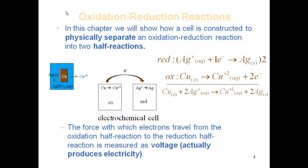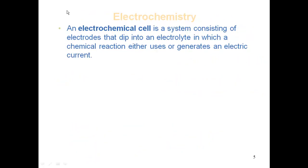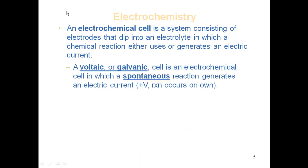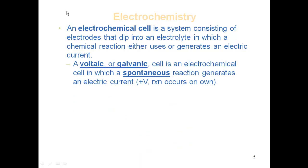The force with which electrons travel from the oxidation half-reaction to the reduction half-reaction is measured as voltage. An electrochemical cell is a system consisting of electrodes that dip into an electrolyte in which the chemical reaction either uses or generates electric current.